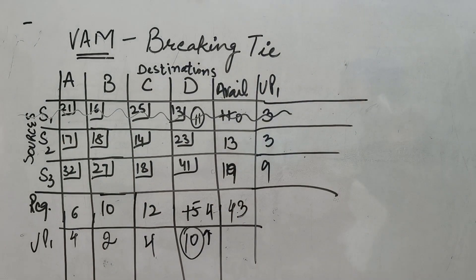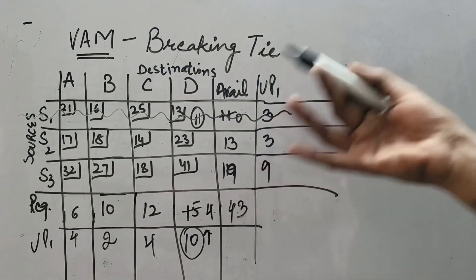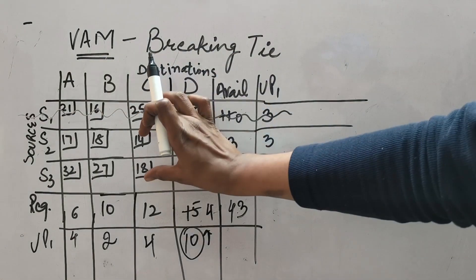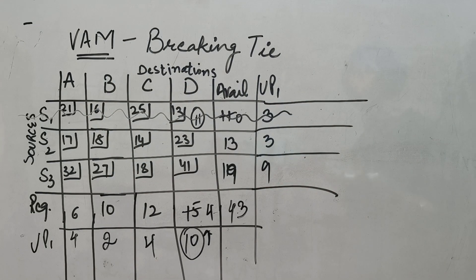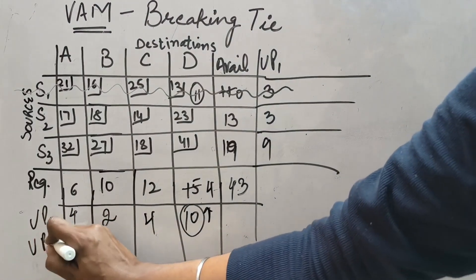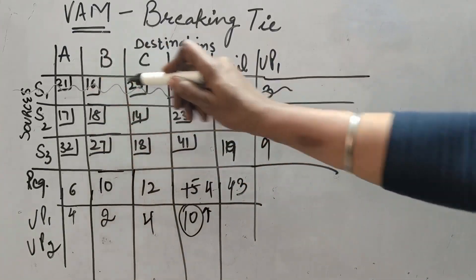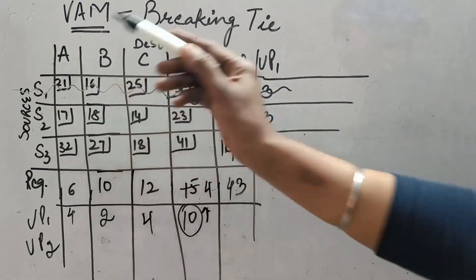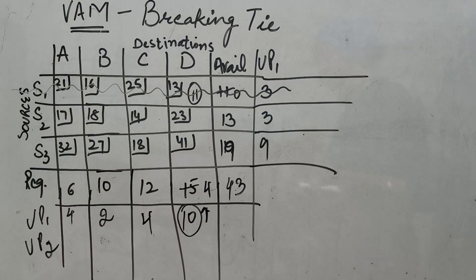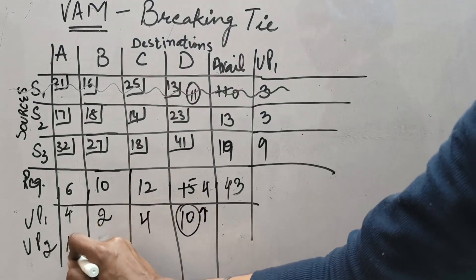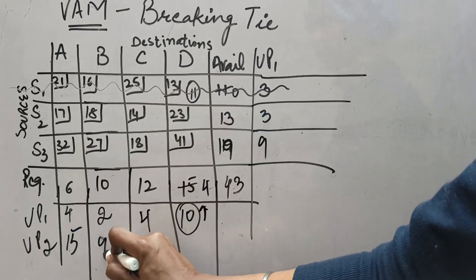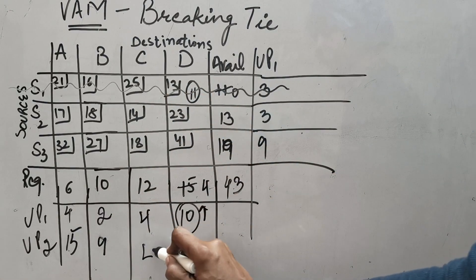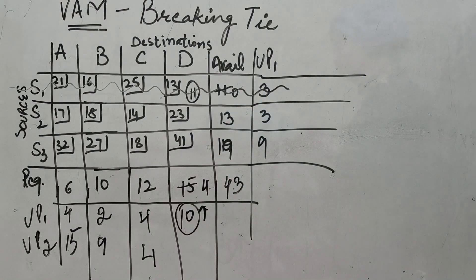This row no longer exists. Either prepare a new table deleting this row, or just strike it through. Now again we start with further unit penalties — UP2. In this question we are left with two rows; this row has been deleted. So now: 17 and 32, only two values, difference is 15. Next: 18 and 27, difference is 9. Then 14 and 18, difference is 4. And 23 and 41, difference is 18.